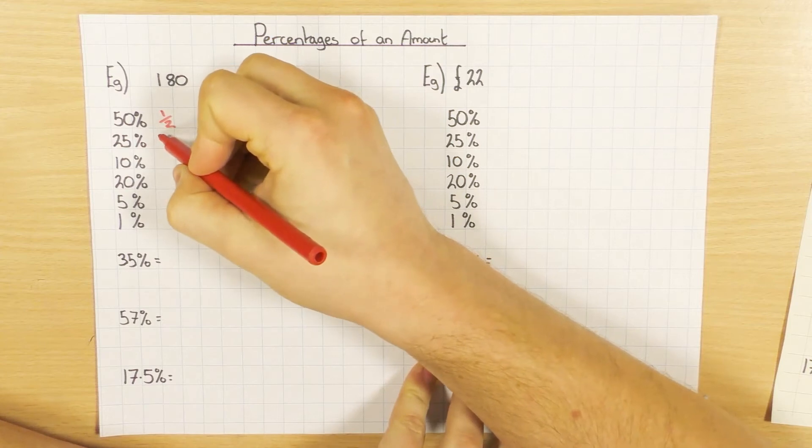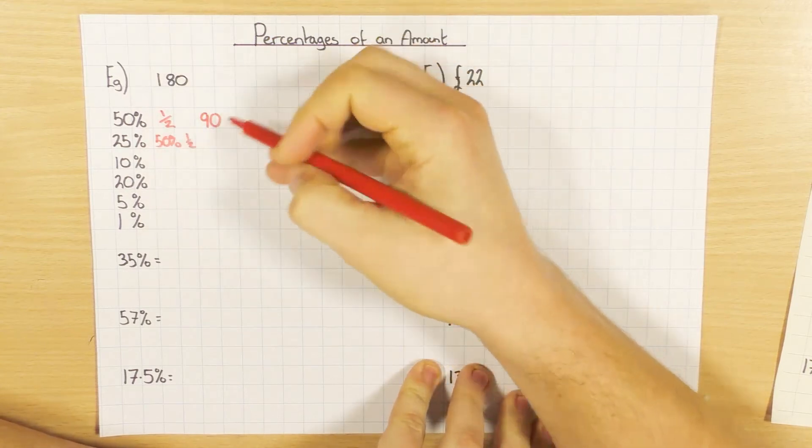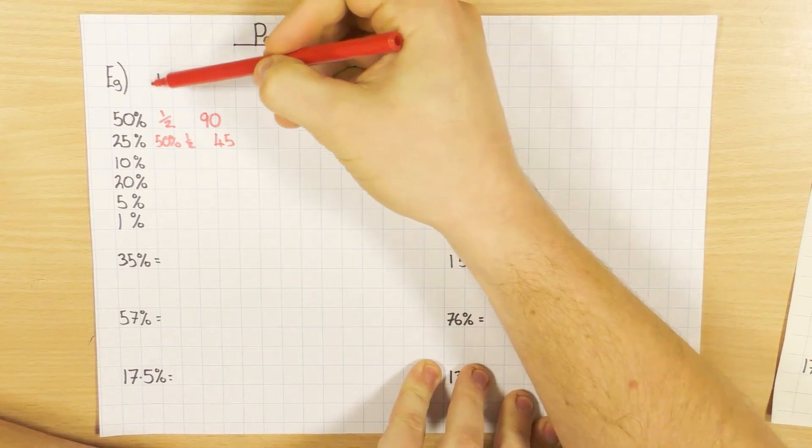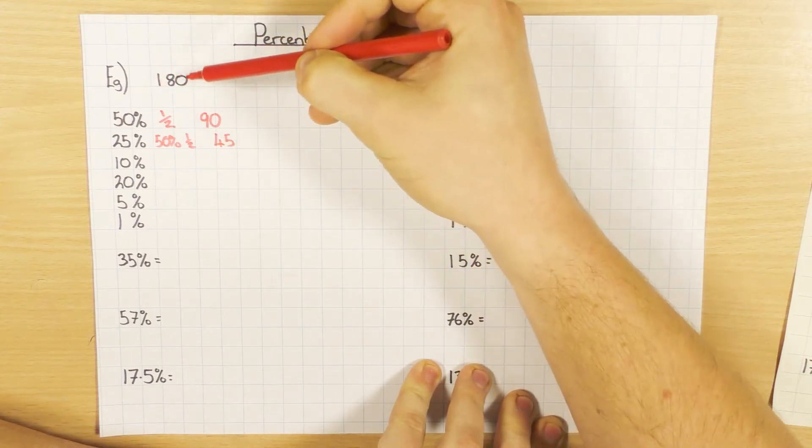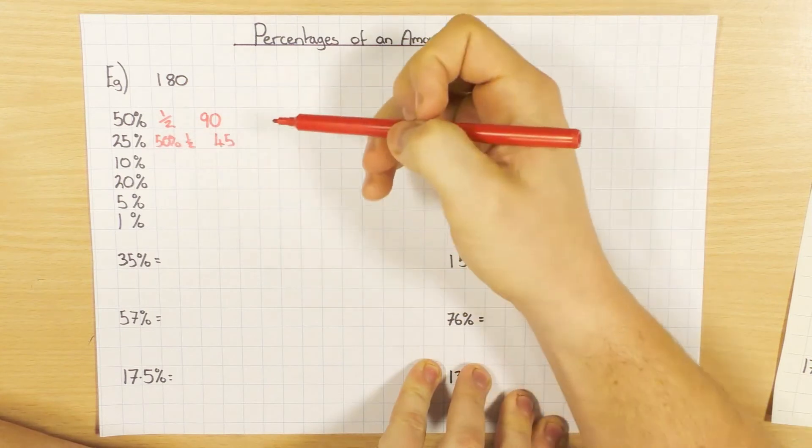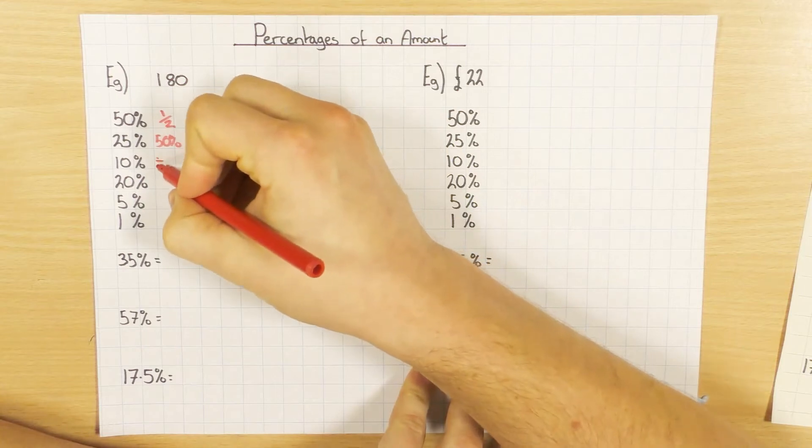To find 25%, we find 50% and half it again. So 50% was 90, half of that would be 45. Or some people say if you go back to the original 180, we half it and half it again. Absolutely fine, or you can just find 50% and half it, both meaning exactly the same thing.